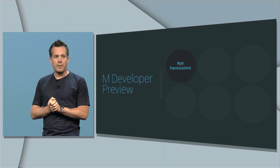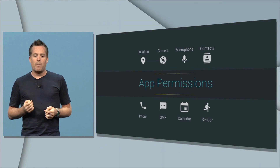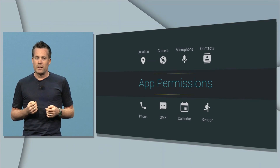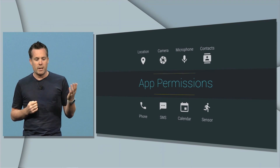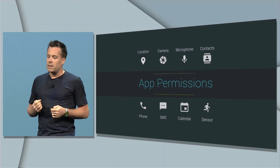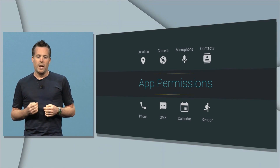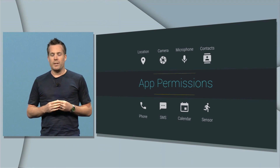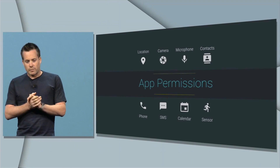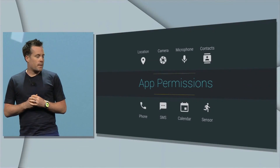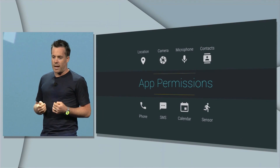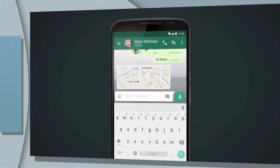Now what Google is going to do is grant permissions based on their use. When an app requires something like the camera, Wi-Fi, or storage, the first time it will prompt the user to agree to that feature being used. This allows the user to know what an app is actually going to be doing and when, and more importantly it allows developers to get rid of a large chunk of the friction of scaring users off with long lists of permissions, many of which the user may never actually use in the first place.